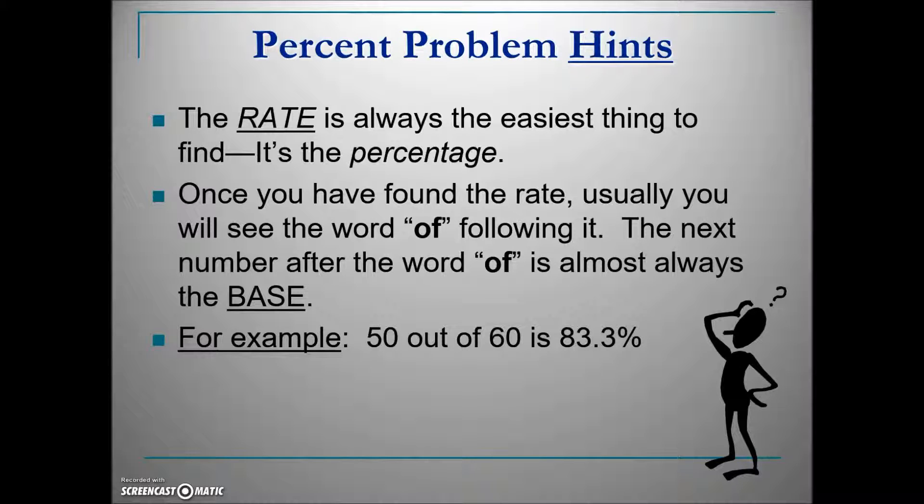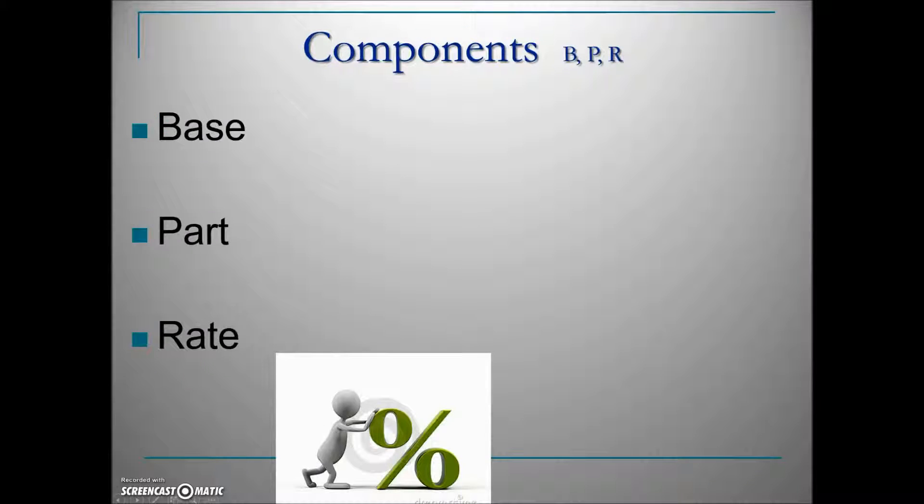Here's a scaled-down generic problem: 50 out of 60 is 83.3%. We can identify the components using this hint. Here's our percentage—the rate. What follows the word 'of' is our base, and the only other number is the part. Another example: 45 is 90% of 50. The easiest to identify is the rate. Following 'of' is our base, leaving 45 as the part.